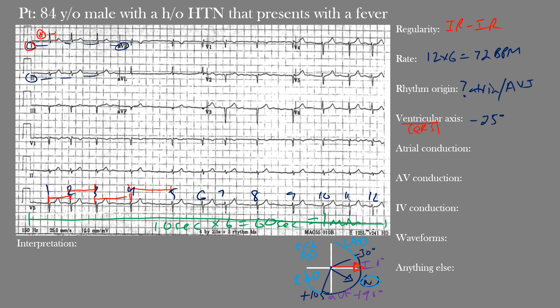Looking at lead I, we see mostly positive upright complexes — so lead I heads toward its positive end. Looking at lead AVF, we have mostly negative complexes, meaning we're going away from the positive end of AVF. That puts us somewhere in the left axis region. Note that physiologic left axis deviation (still normal) is one region, while pathological left axis deviation is beyond negative 30 degrees, so we need to look at another lead — lead II.